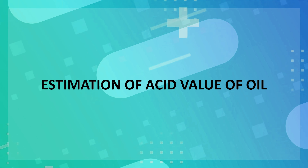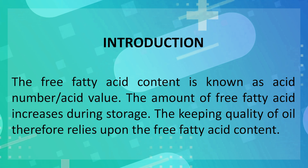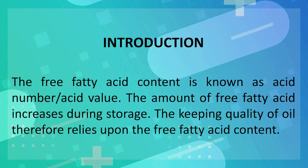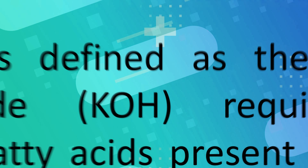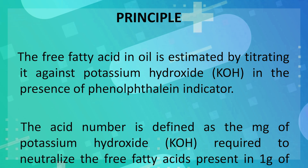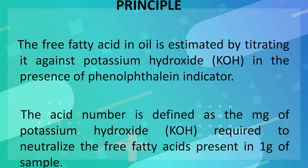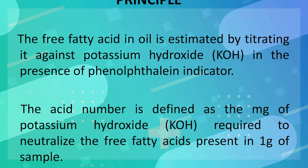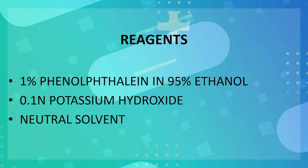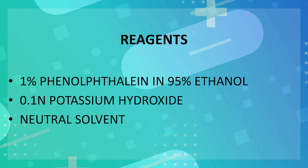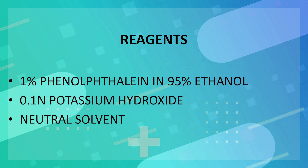Through this video, we are going to demonstrate the estimation of acid value of oil. The free fatty acid content is known as acid number or acid value. The amount of free fatty acids increases during storage, and the keeping quality of oil relies upon the free fatty acid content. The free fatty acid in oil is estimated by titrating it against potassium hydroxide in the presence of phenolphthalein indicator. The acid number is defined as the milligrams of potassium hydroxide required to neutralize the free fatty acids present in one gram of sample. Reagents required: 1% phenolphthalein in 95% ethanol and 0.1 normal potassium hydroxide.